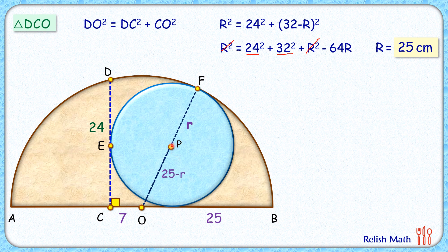From P, let's join point E, which is the point of tangency. So PE is radius of the circle, that's small r. And from point O, let's draw perpendicular on PE. Now CO is 7, and thus EM will be 7 centimeters.